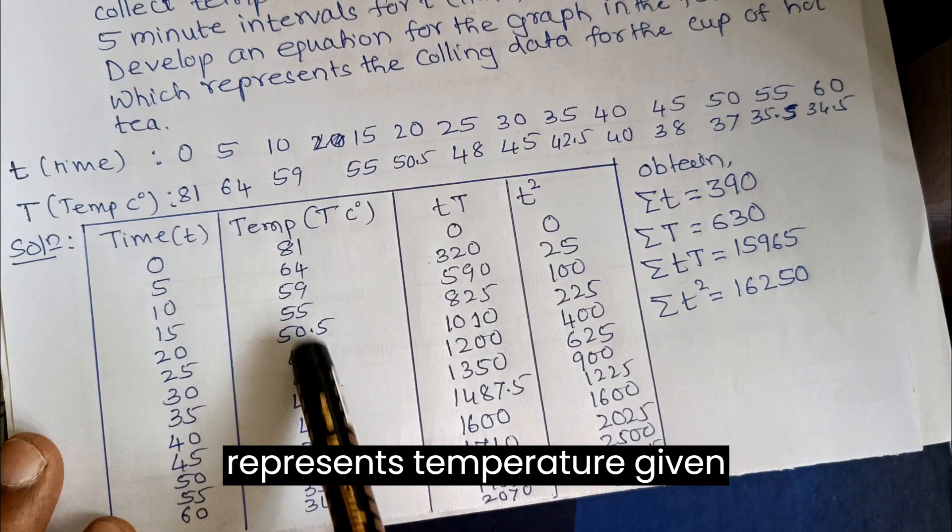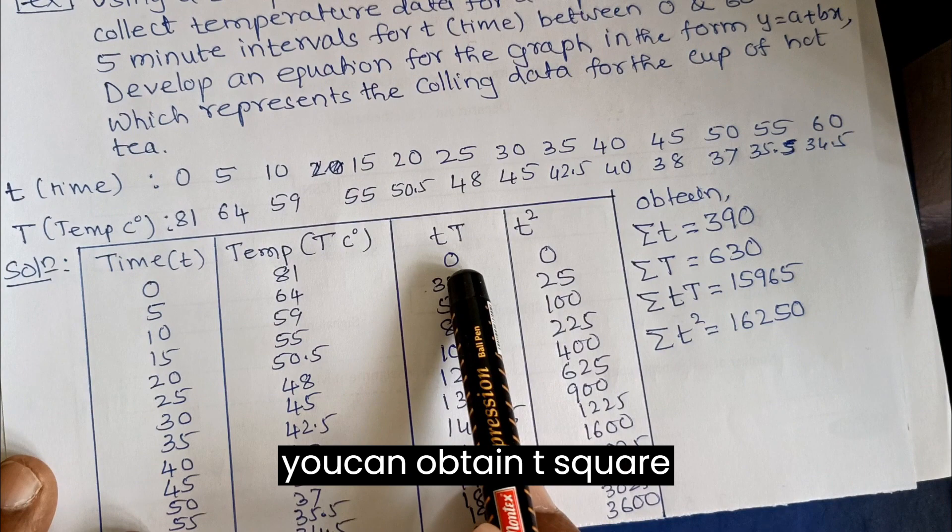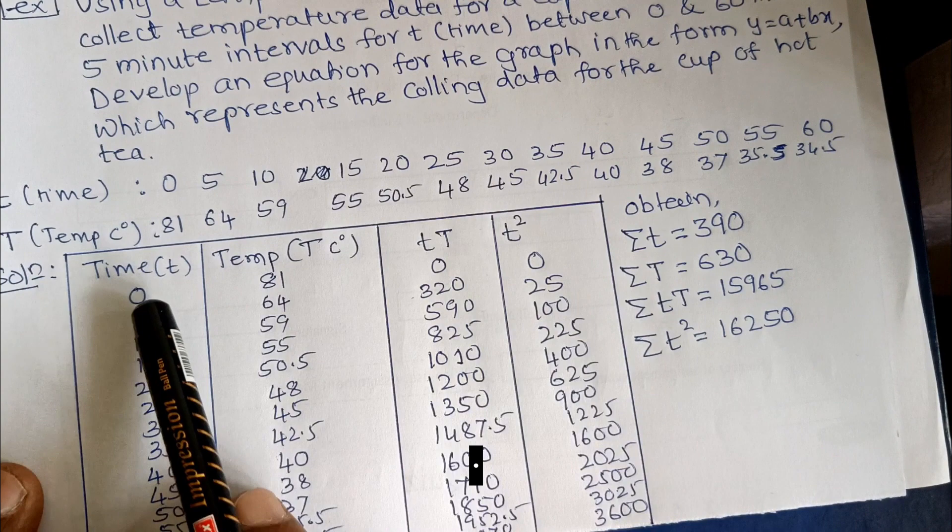First column represents time, second column represents temperature, given data. Now I will multiply these two columns: 0 into 81 gives 0. Like that, we can prepare the third column.